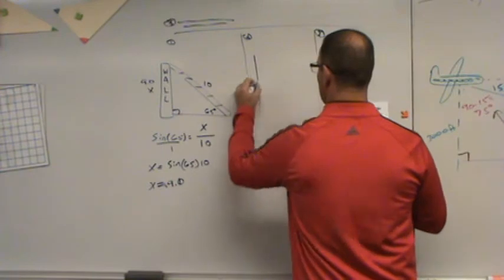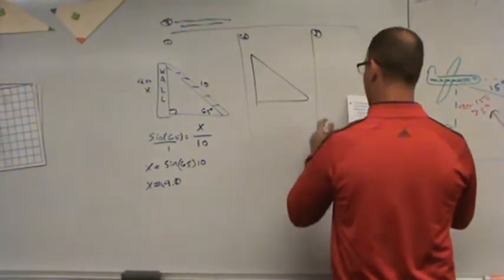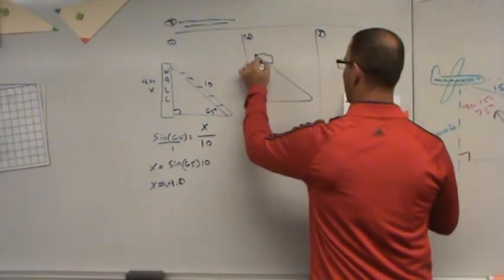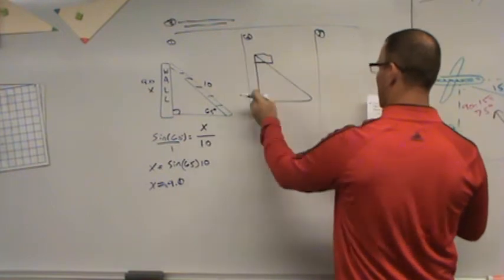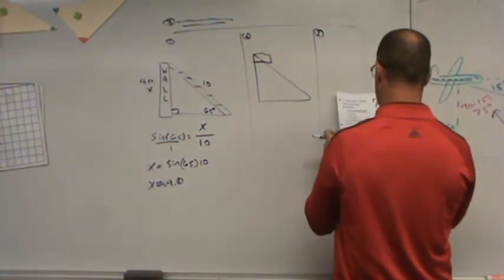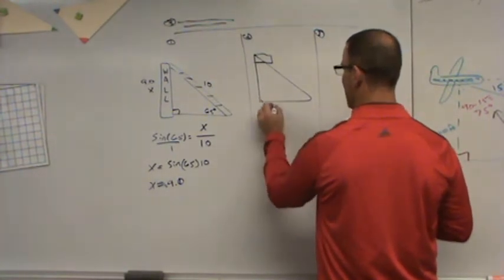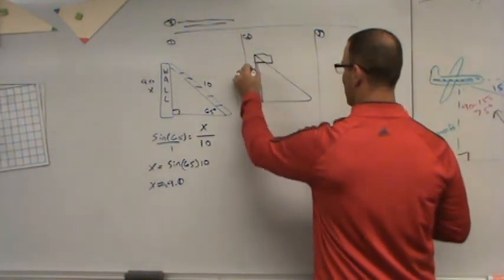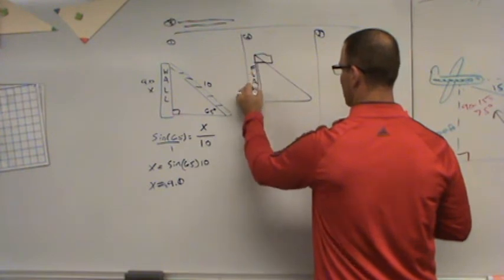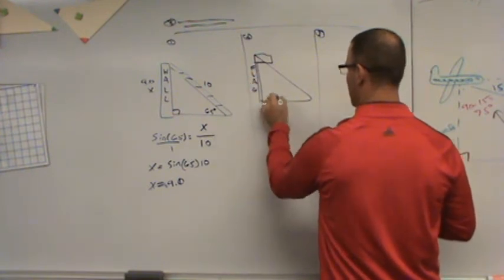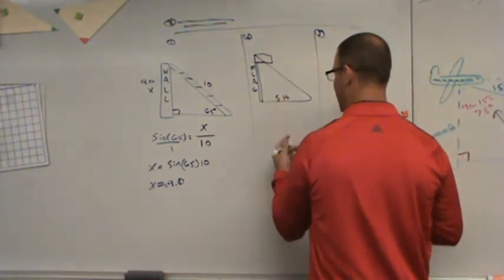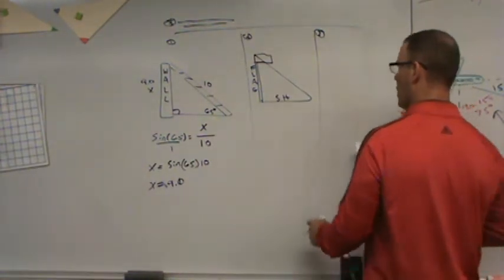Number two, you should have had a flagpole. I drew a flag. And then the sun is casting a shadow, and it says there is a 40-degree angle of elevation with a 15-foot shadow. Well, obviously, the flagpole's here. The flagpole's here, so the shadow should be on the ground.